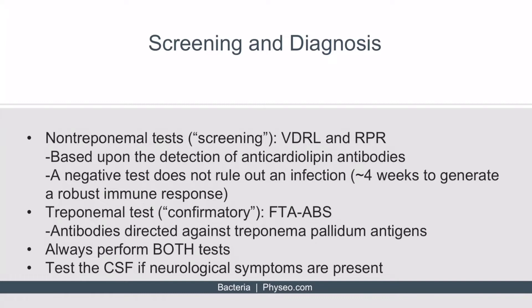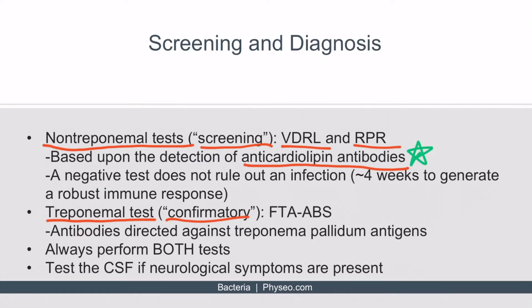There are two general categories of tests used to screen for and diagnose syphilis: non-treponemal tests and treponemal tests. Non-treponemal tests are generally considered screening tests, while treponemal tests are confirmatory tests. For Step 1, you need to know three specific tests. Within non-treponemal tests: the Venereal Disease Research Laboratory test (VDRL) and the Rapid Plasma Reagin (RPR) test — either can be used and are equivalent. Both are based upon the detection of anti-cardiolipin antibodies, which are antibodies that form in response to lipids released following cell damage caused by Treponema pallidum. This is high yield, so remember this point.